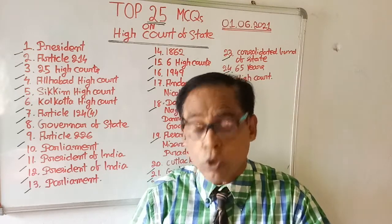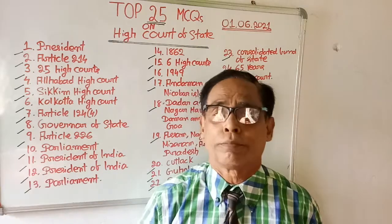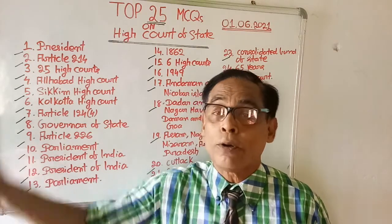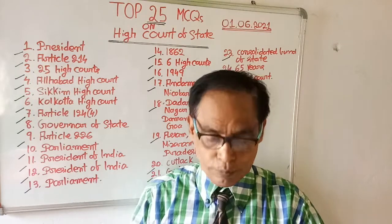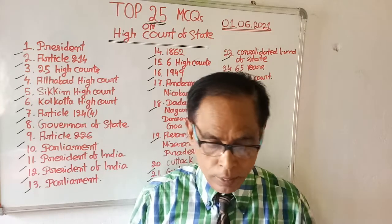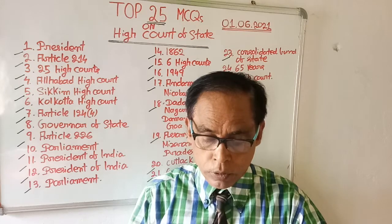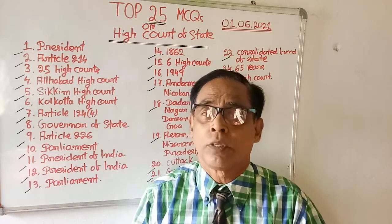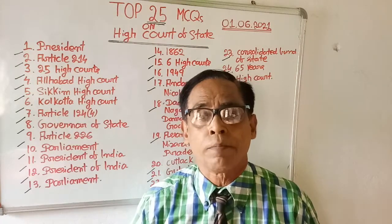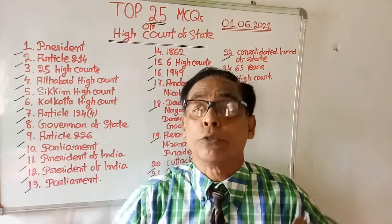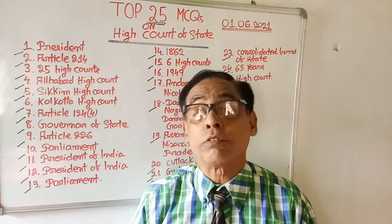Question number three: how many High Courts are in our country? Options are: 18, 20, 24, and 25 High Courts. The right answer is 25 — in our country there are 25 High Courts.